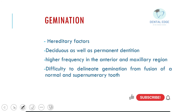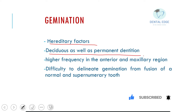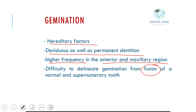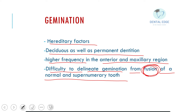Germination can be due to hereditary factors. It can affect deciduous as well as permanent dentition, with higher frequency in the anterior and maxillary region. It is sometimes difficult to differentiate germination from fusion of a normal and supernumerary tooth, but we will understand this better when we read about fusion.